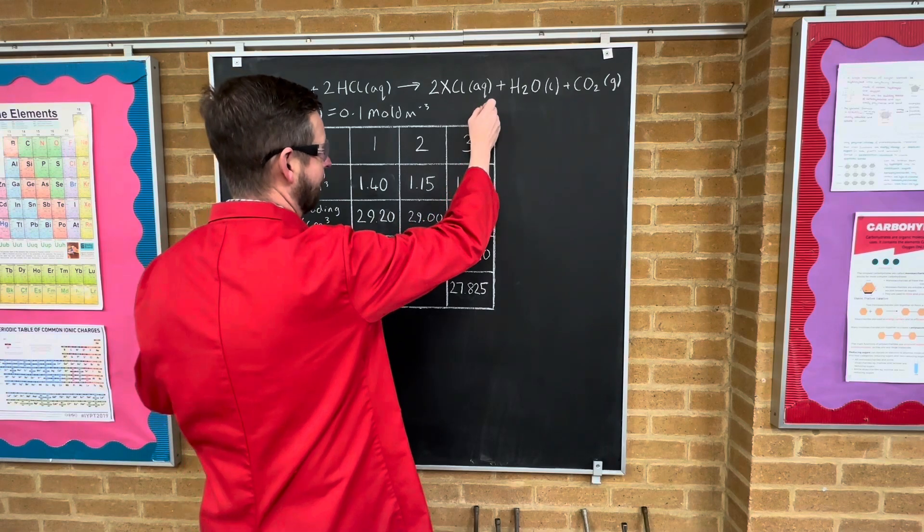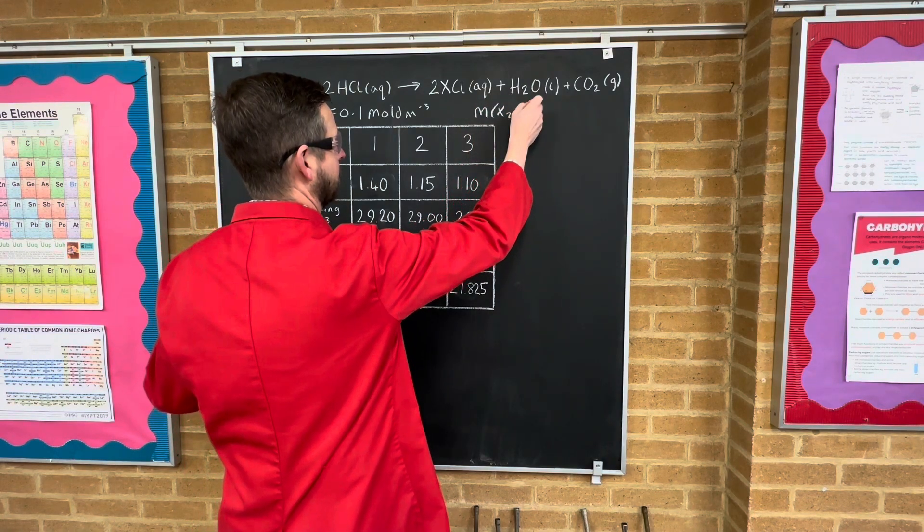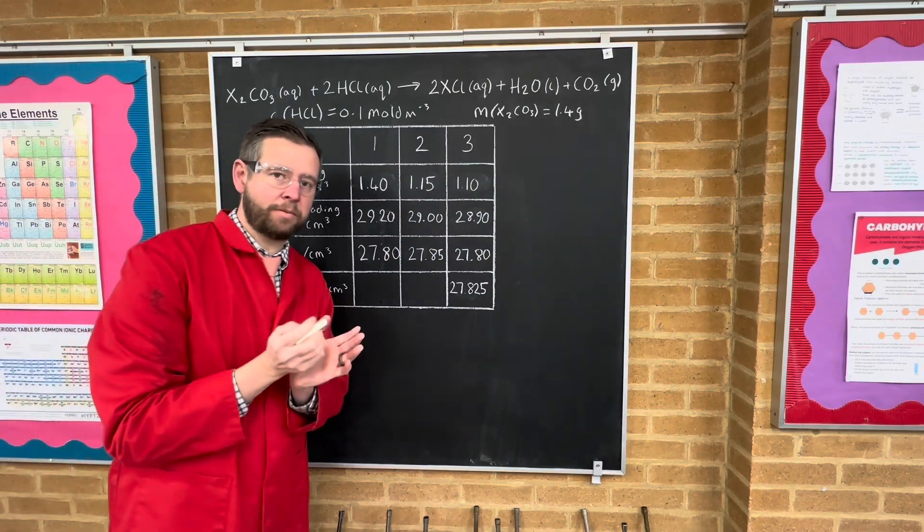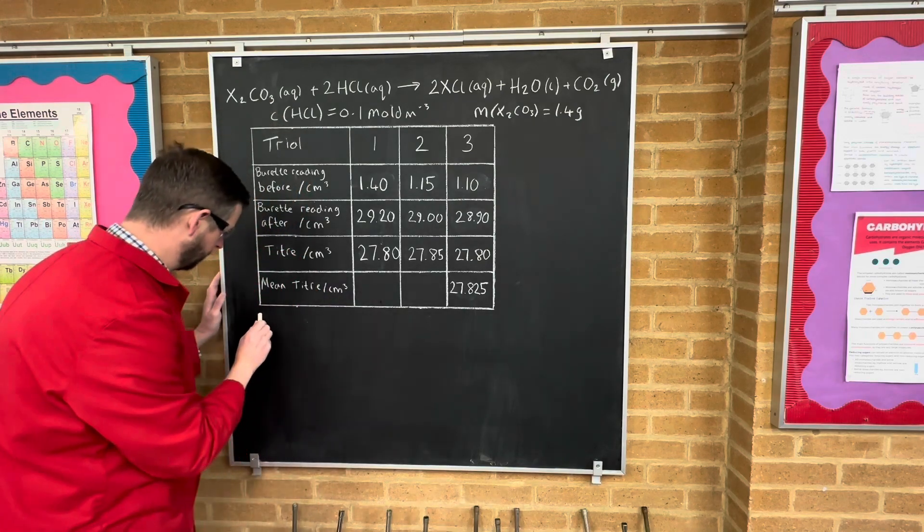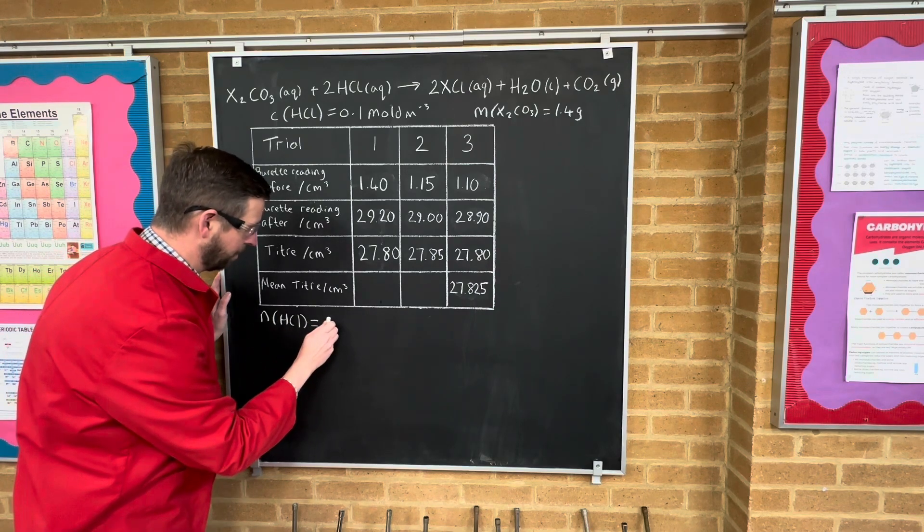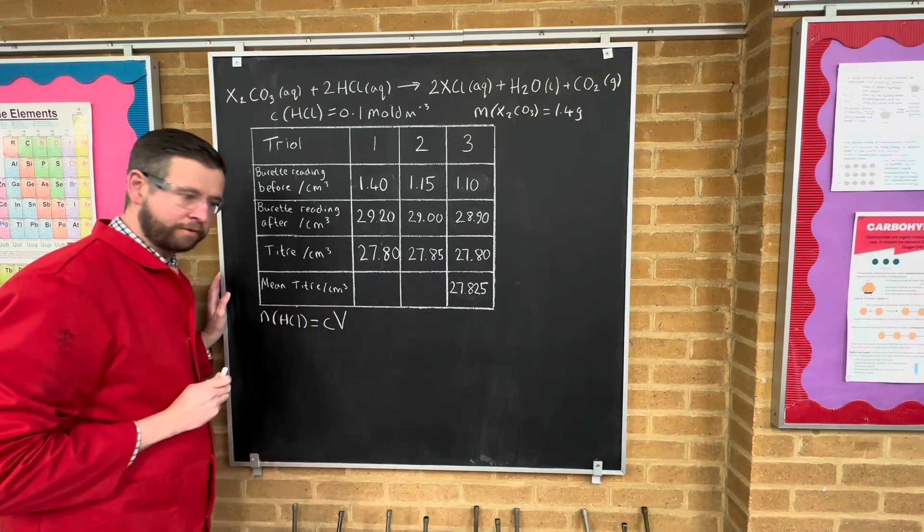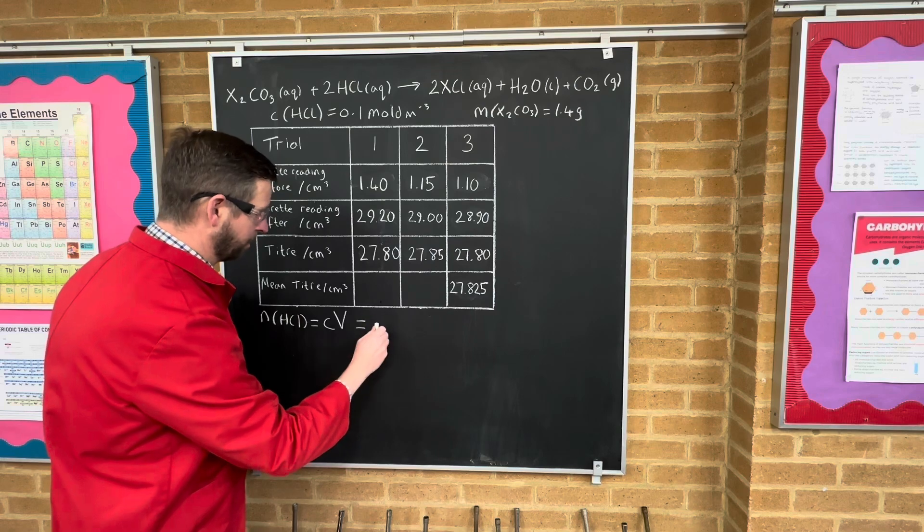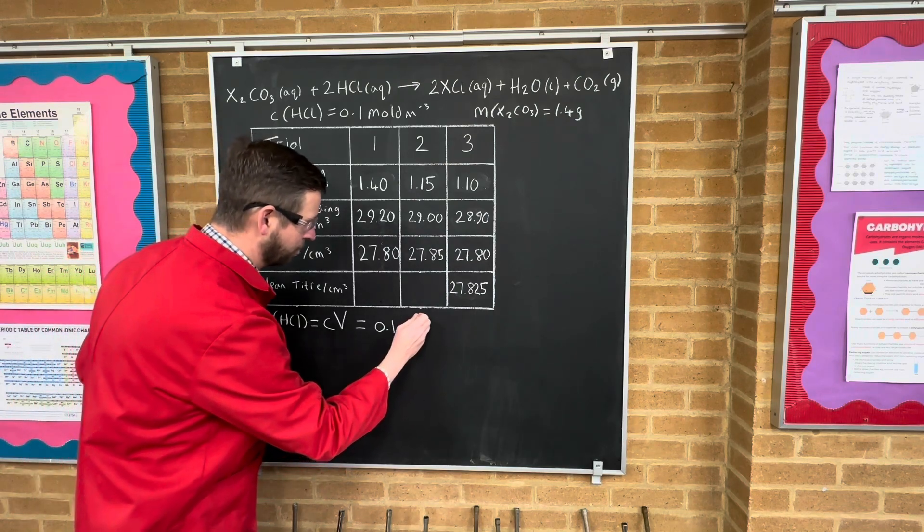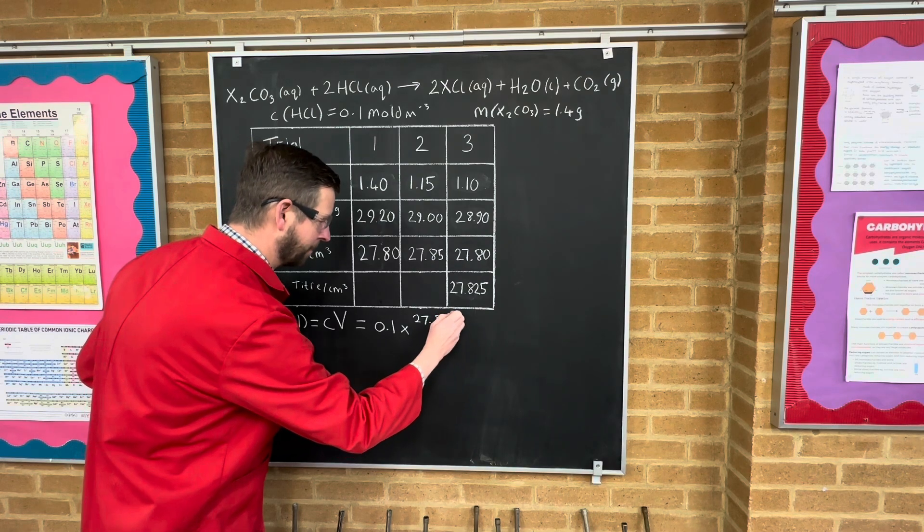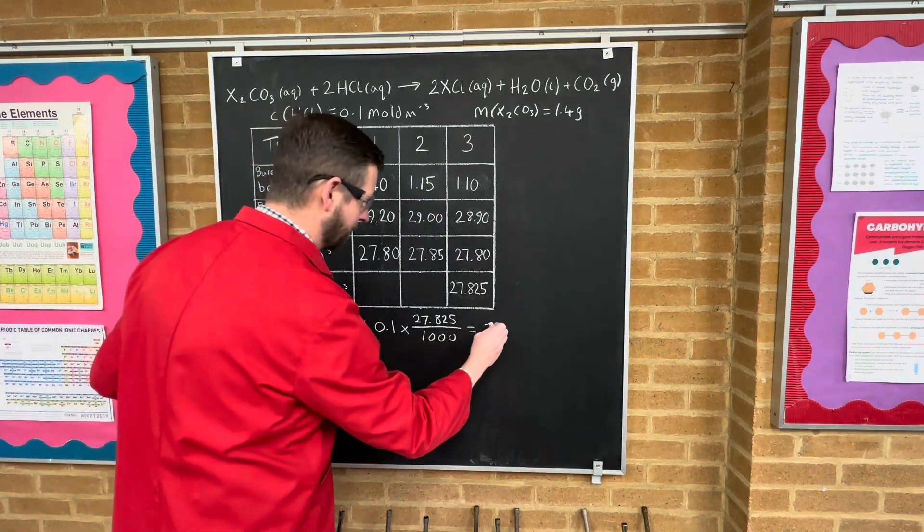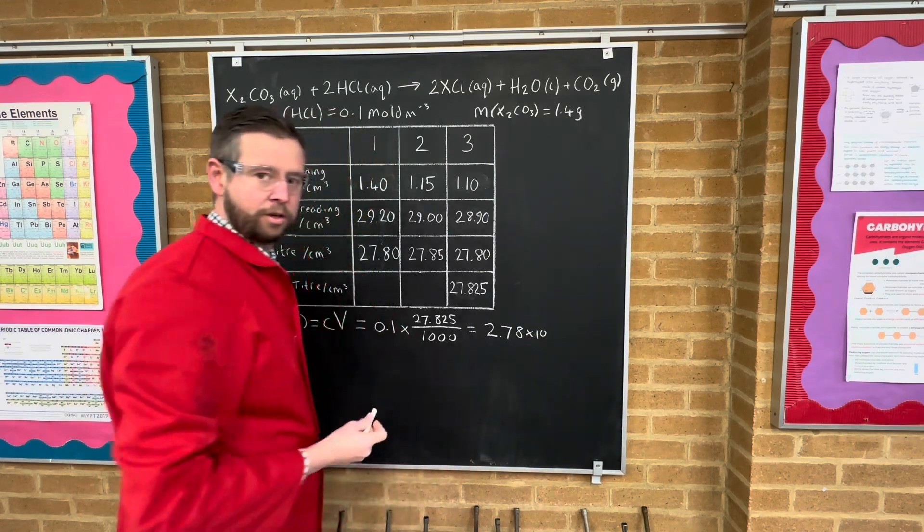The mass, the sample mass of the unknown carbonate X2CO3 was equal to 1.4 grams. So the very first thing we need to do is work out how many moles of acid were used. So the number of moles of HCl equal to the concentration of the acid multiplied by the volume, the titer, that went through the burette. So that is equal to the concentration of 0.1 multiplied by the volume. But of course, that's in centimeters cubed, and we need this volume in decimeters cubed. So we've got to do the trick of dividing by a thousand. And this comes out at 2.78, rounding up, times 10 to the minus 3 moles.